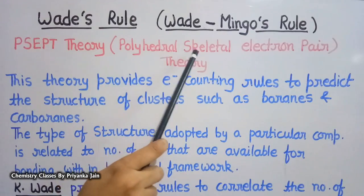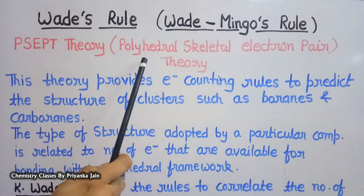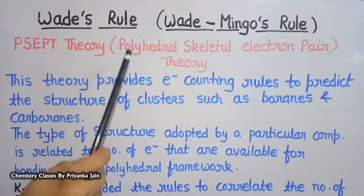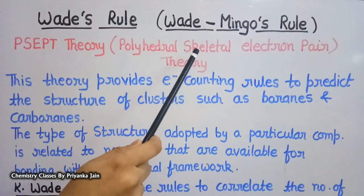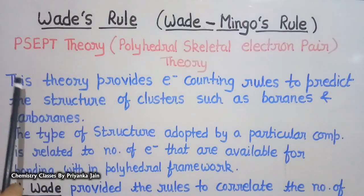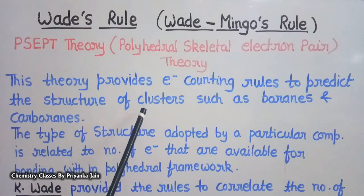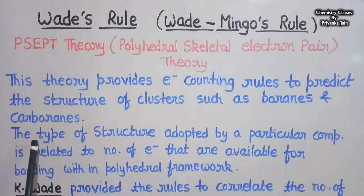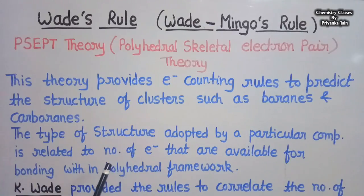Polyhedral means cluster compounds and the skeleton electrons means the framework electrons present in these compounds. The structure of polyhedral compounds or cluster compounds is directly related to the framework electrons or skeleton electrons present in these compounds. This theory provides the electron counting rules to predict the structure of clusters such as borons and carbons.